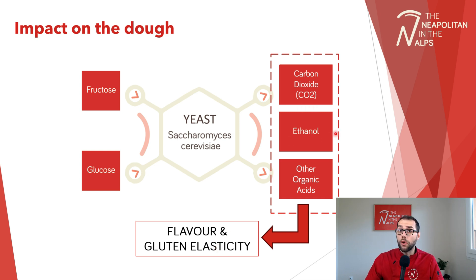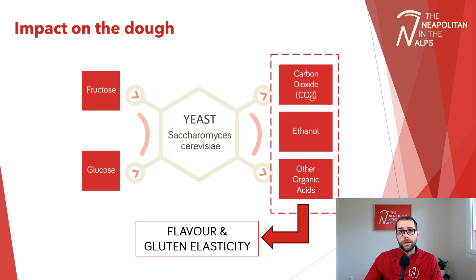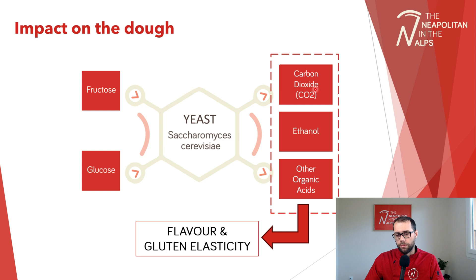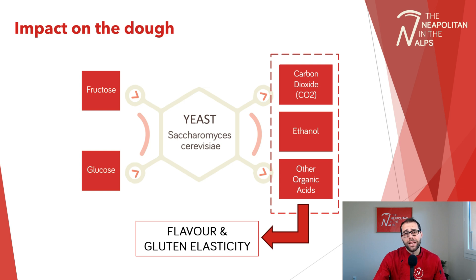Gluten elasticity is impacted by the pH level of our dough, which is determined by the concentration of organic acids, but also by oxidation — and it's the carbon dioxide that impacts oxidation. As regards flavor, many more elements are involved: organic acids and ethanol, but also other compounds released as part of yeast metabolism — like esters — and other products that react during baking to further increase flavor. It's a very intricate network of reactions, all linked to fermentation.